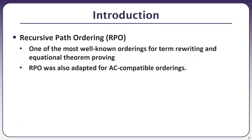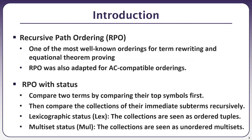Recursive path ordering is one of the most well-known orderings for term rewriting and equational theorem proving. RPO was adapted for AC-compatible orderings, and the AC-compatible orderings have been well-researched in the literature. The basic idea of RPO-with-status is to compare two terms by comparing their top symbols first, then compare the collection of their immediate subterms recursively.